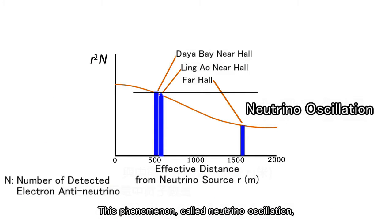This phenomenon, called neutrino oscillation, is precisely what the experiment sought to measure.